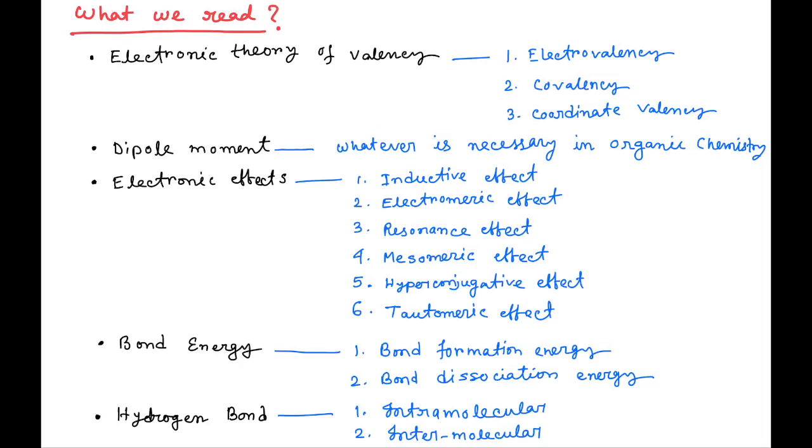The first topic which is fundamental to basic organic chemistry is electronic theory of valency. What is valency and what is the electronic theory behind it? In this we will study what is electrovalency, what is covalency, and what is coordinate valency. And we will also understand this with corresponding examples.